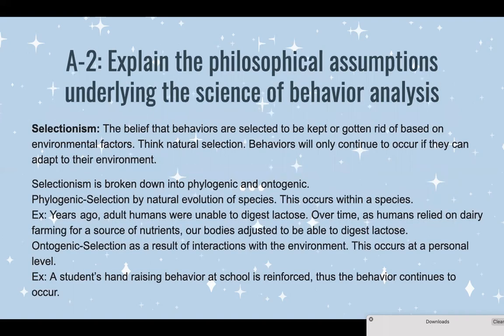Selectionism. You'll want to think about natural selection when you think of selectionism. It's the belief that behaviors are selected to be kept or gotten rid of based on environmental factors. Behaviors are only going to continue if they can adapt to their environment. Selectionism is further broken down into phylogenic and ontogenic.